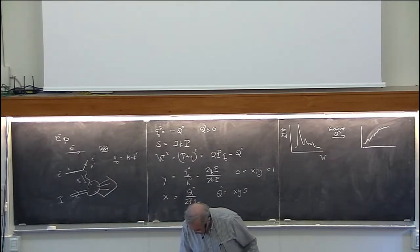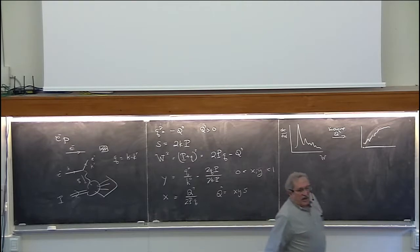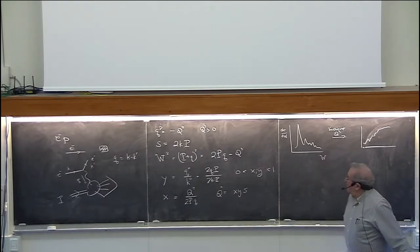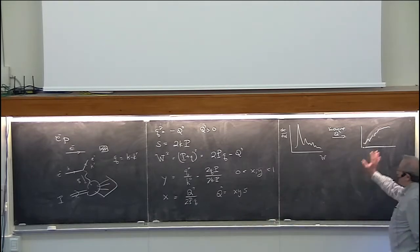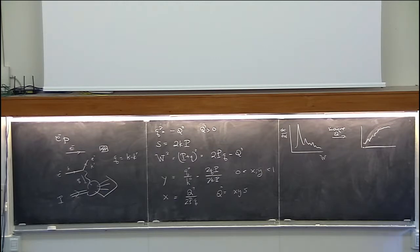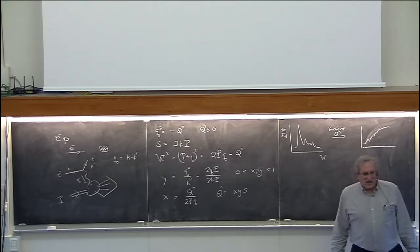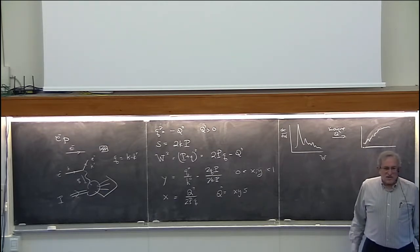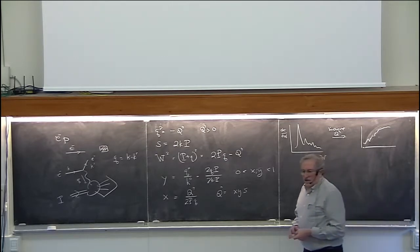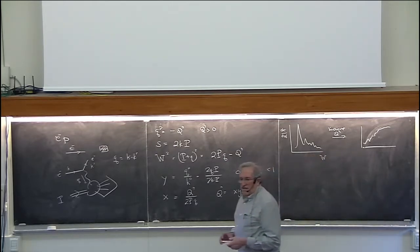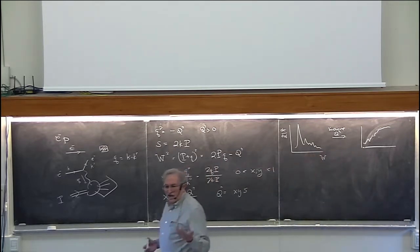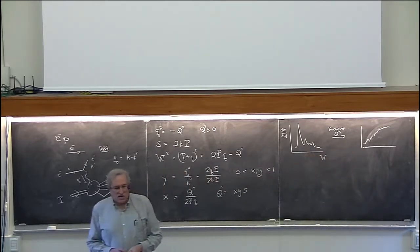The actual data from the famous SLAC-MIT experiment of the 1960s is shown in figure one, so you can see what this really looks like. How do you make sense of this? In the 1960s, people struggled to make sense of it. But now that we understand the standard model, we have a lot of hindsight, and we can apply that to try and guess what the answer ought to look like.